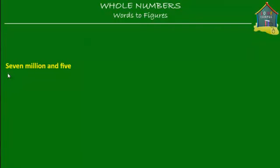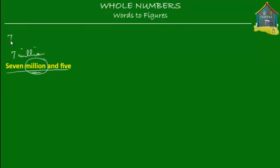What we've got is seven million and five. We said that when you see a number like this, you mark the keywords 'million' and 'thousand.' In our case we don't have thousand here. So let's write the million — seven million would be seven followed by six zeros. There's nothing for thousands, so we just leave it blank. And the five is simply five.